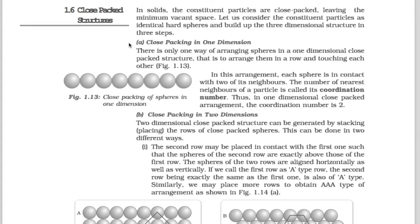The first step to prepare a three-dimensional structure is closed packing in one dimension. There is only one way of arranging spheres in one dimensional closed packing, i.e., to arrange them in a row and touching each other. You can easily understand with the help of this diagram. In this type of arrangement, each sphere is in contact with two of its neighbours.